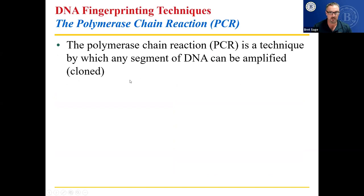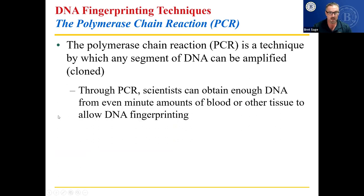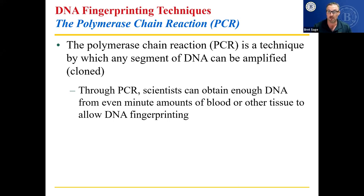PCR — polymerase chain reaction — is a technique by which any segment of DNA can be amplified or cloned. You have a little bit of blood but need a lot of DNA to run through gel electrophoresis. Through polymerase chain reaction, scientists can obtain enough DNA from even minute — meaning very small — amounts of blood or other tissue to allow for DNA fingerprinting. For example, one eyelash could be enough, since the base has living cells in it.